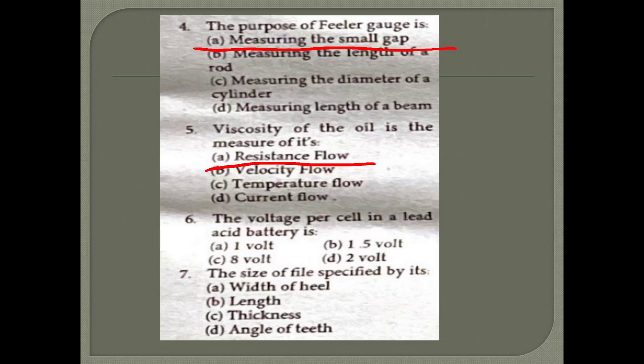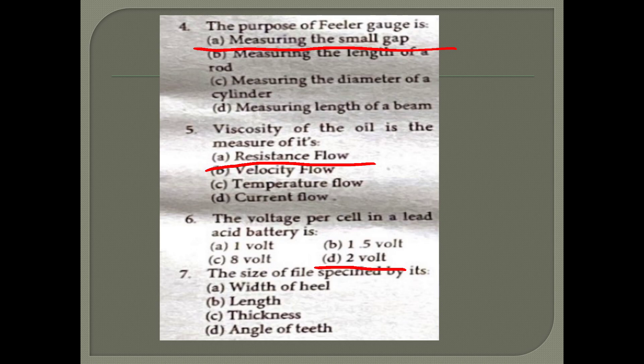Sixth question: Voltage per cell in lead acid battery is 2V. Seventh question: The size of the file is specified by its width of heel, length, thickness, or angle of teeth. It is option B - length.